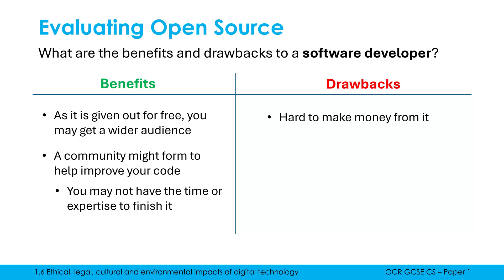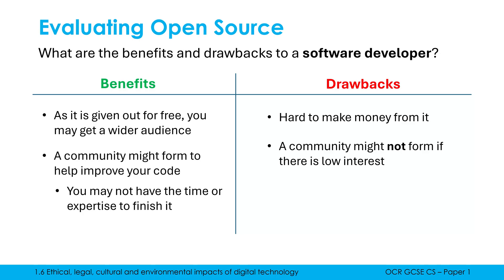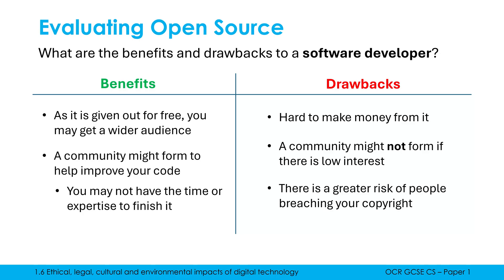The key downside, however, is that it's very hard — if not impossible — to make money from open source software because it's given out for free and anyone can use and change it. The benefit of a community improving it might not happen if there is low interest in your idea. Lastly, you have less control over your software, and there is a greater risk of people breaching your copyright. Open source software is still copyrighted and you still need permission to use it — that's what the license grants. However, people are less likely to follow it because the code is just available online; they may ignore the license because they can access the source code with little trouble.